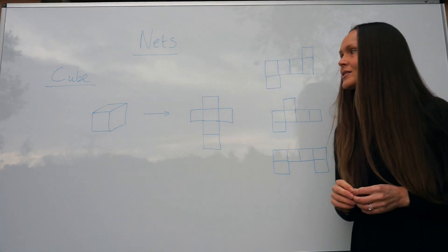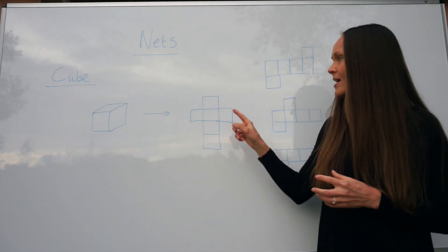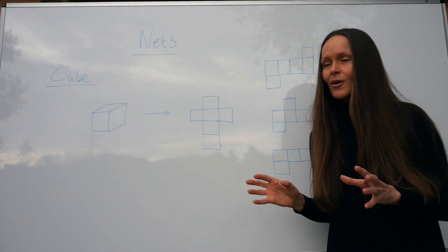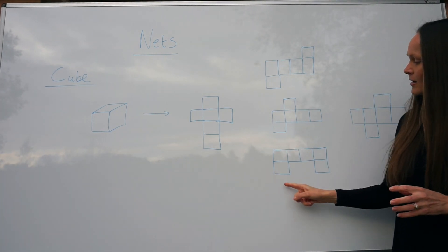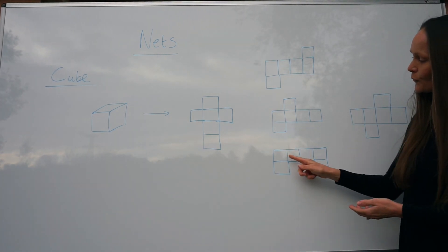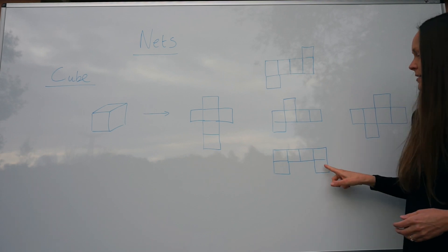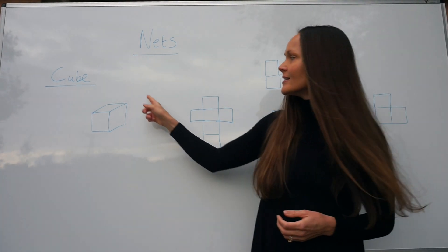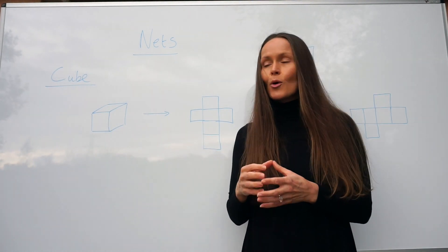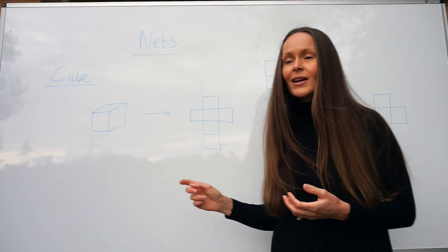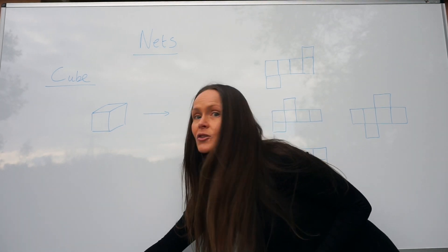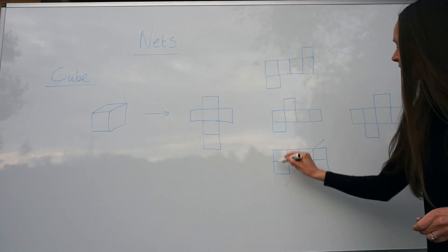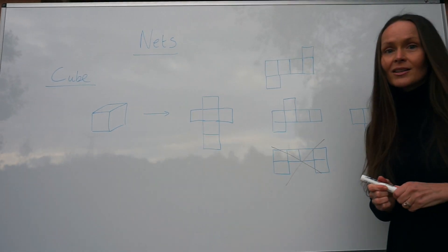There's one however that isn't a net of a cube. You can't just draw these squares in any odd place. This one here, hopefully you can see that if you were to fold these back together, these two would end up overlapping. This is a solid shape; there are no open sides. So this one was a trick net. That one is not a net of a cube.